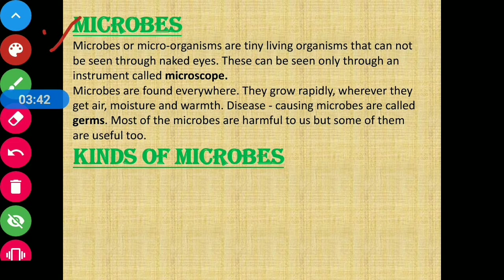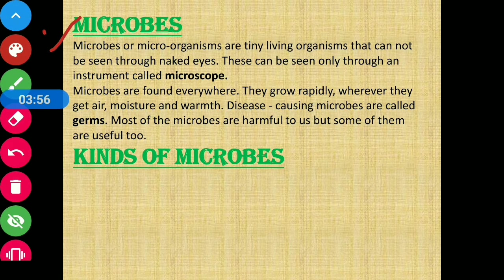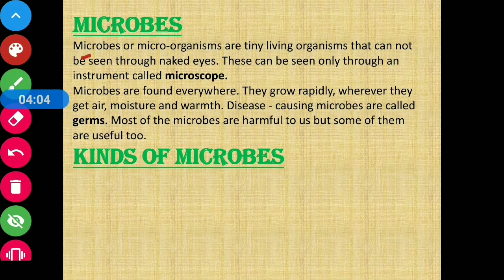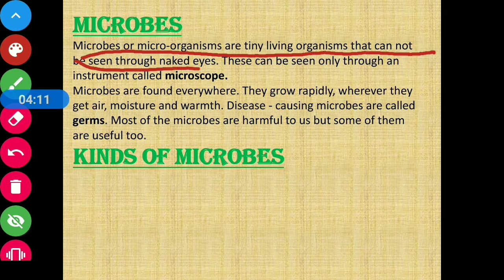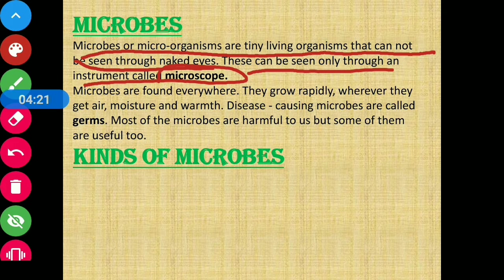Next, we are going to discuss microbes. Microbes kya hote hain? Woh tiny organisms hote hain jo ki naked eyes ki help se hum nahi dekh sakte — sirf microscope ki madad se dekh sakte hain. Microbes or microorganisms are tiny living organisms that cannot be seen through naked eyes. These can only be seen through an instrument called a microscope.